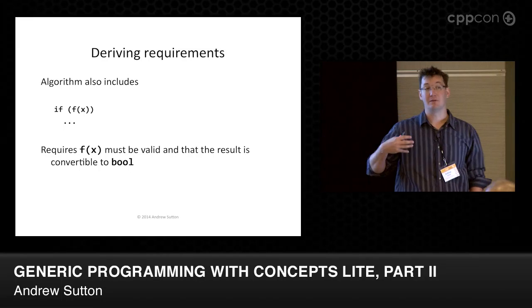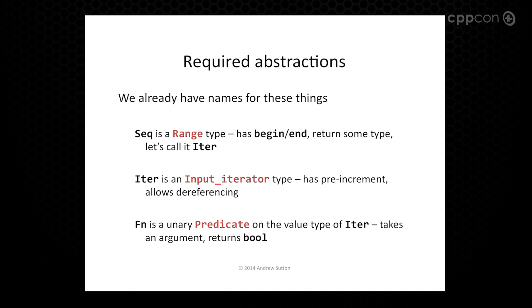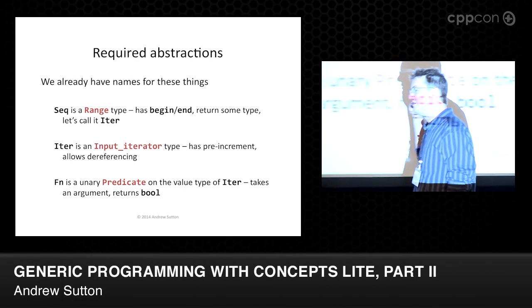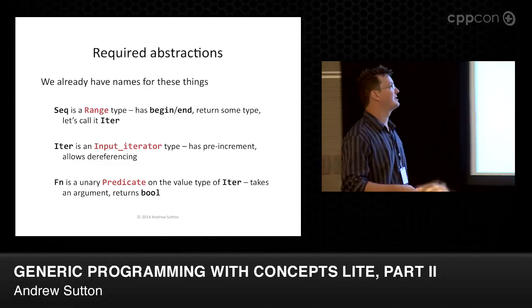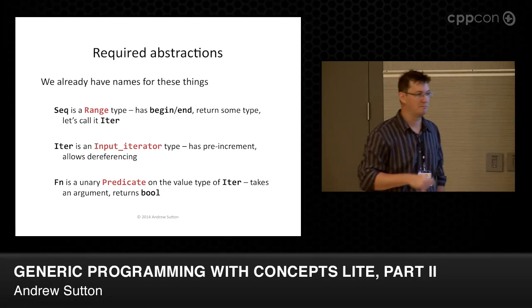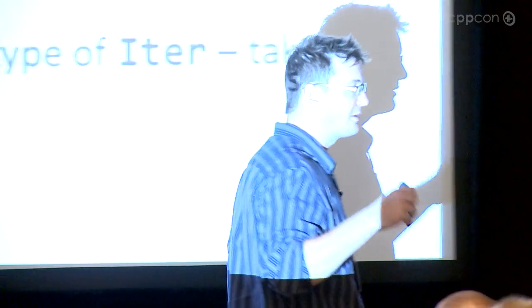We could go through the exercise of looking at a whole bunch of algorithms to do the same thing, then try to find good names for these — but we're going to skip ahead and say we've already done that because we have. So the sequence type is really a range. It has begin and end, and the result type of those operations is some type we'll call iter. Iter is required to be an input iterator at least in this algorithm — meaning you can increment it and dereference it. And predicate is actually a unary predicate on the value type of the iterator that returns bool.